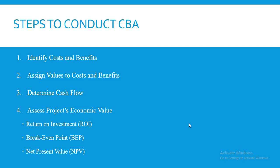We can use certain proxy measures to assign a value to intangible benefits. That takes us to step two: once you have identified your costs and benefits, you assign values to them. For direct development costs — such as the cost of hardware or paying developers — you attach a specific value. Similarly, for benefits like increased sales, you estimate the magnitude of increase over the next four or five years, perhaps 10 percent.